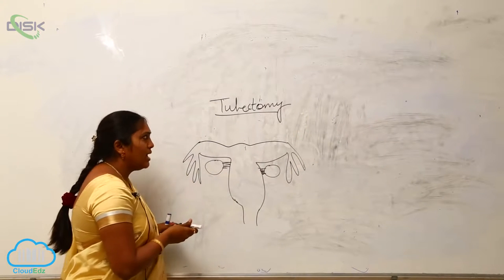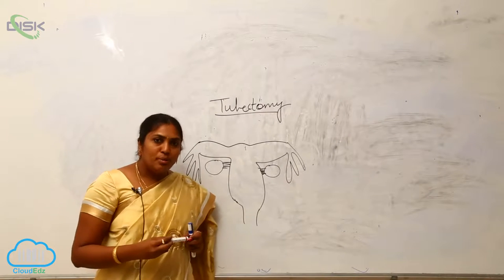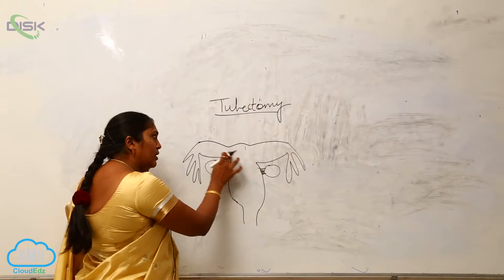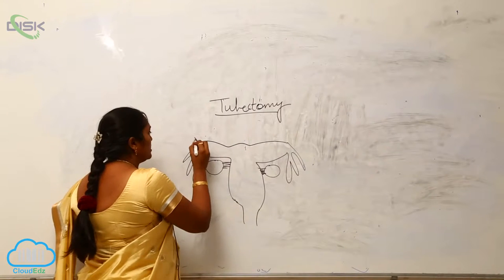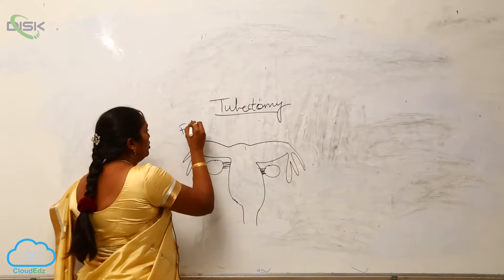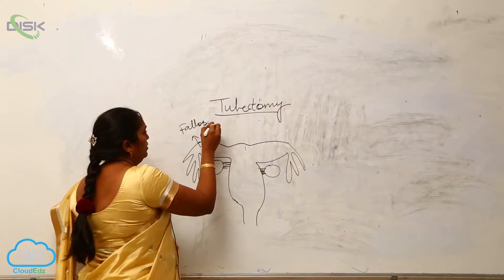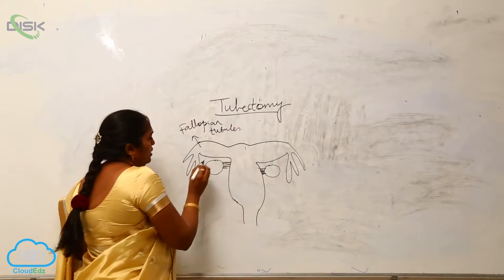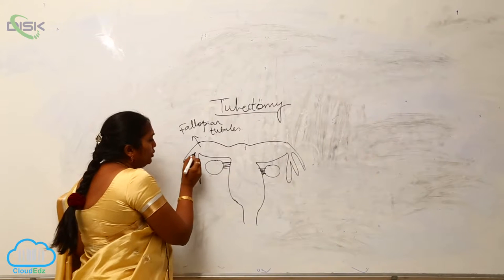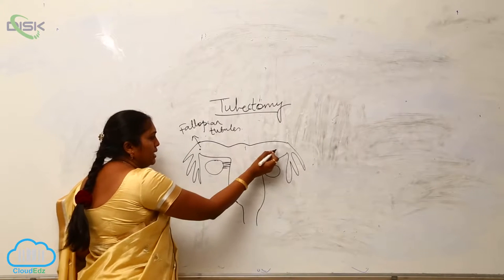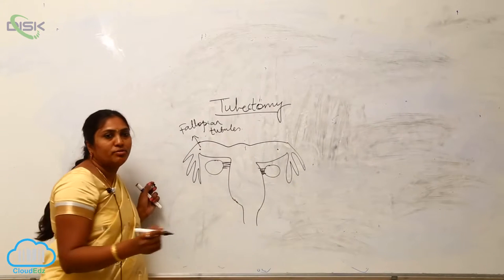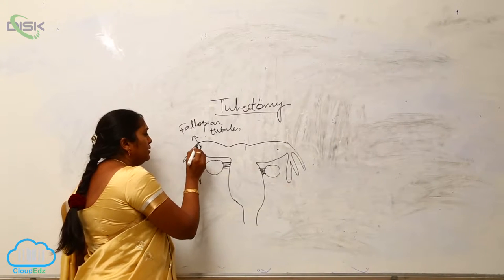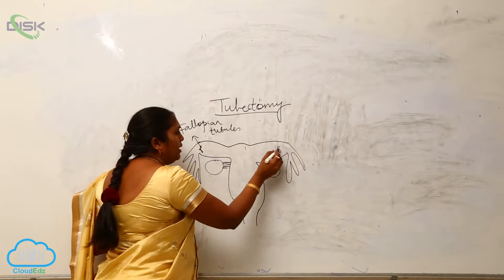In tubectomy, as you know, these are the fallopian tubules. They will make a small insertion on both sides of the fallopian tubule and they will make a knot here.